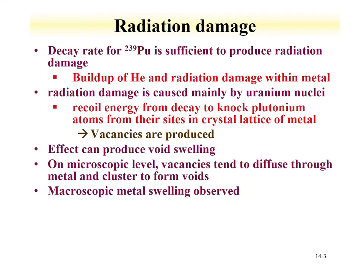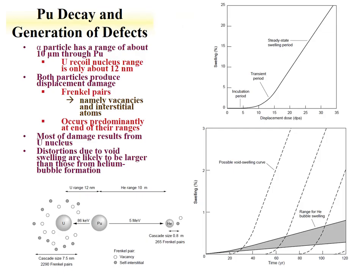The net effect from both the helium and this radiation damage is void swelling. On the microscopic level, the vacancies will diffuse together and cluster, and what's observed is that the metal swells. An alpha particle has a range of about 10 microns through plutonium metal, while the uranium recoil is much smaller, about 12 nanometers.